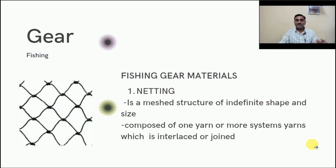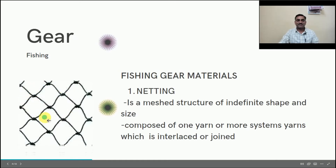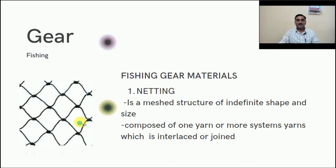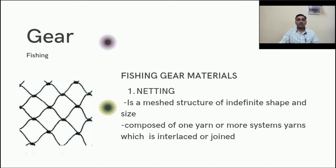First, let us discuss the net. A net is a structure made of meshes tied with knots. Different yarns are tied with knots, and the different structures formed are called mesh. Mesh is a defined edge unit. It is a meshless structure of indefinite shape and size, composed of one or more systems of elements interlocked or joined together — either by twisting or by knotting. These are the basic requirements to form fishing gear, and for these, fibers are required.